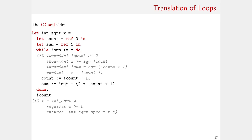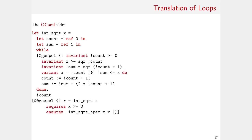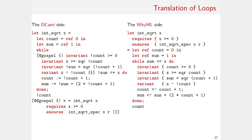Moving on to how we deal with loops — for instance, while loops — we write the invariant also as a Gospel comment. The generated attribute changes the location of the comment slightly, now properly attaching it to the while keyword. Once we reach this point, it is easy to produce equivalent WhyML code.